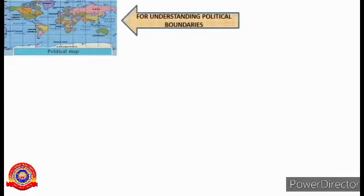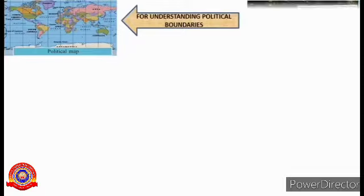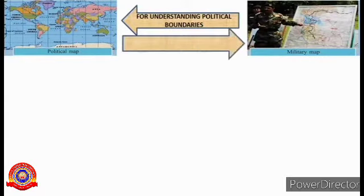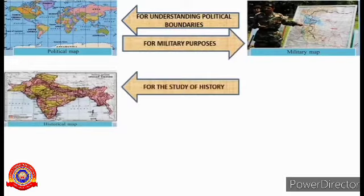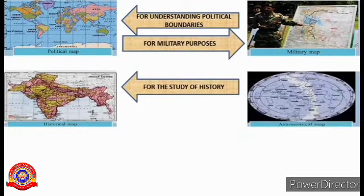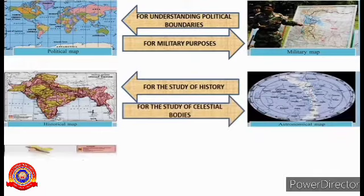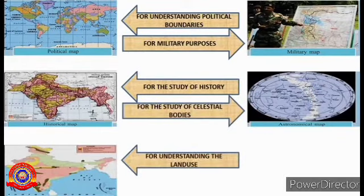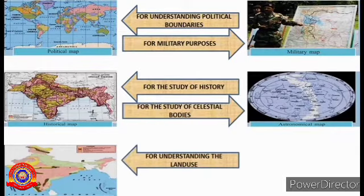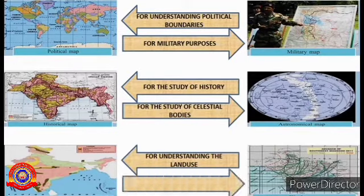A political map is used for understanding the political boundaries. A military map is used for military purposes. A historical map is used for the study of history. An astronomical map is used for the study of celestial bodies. A land use map is for understanding the land use. A weather map is used for meteorological studies.